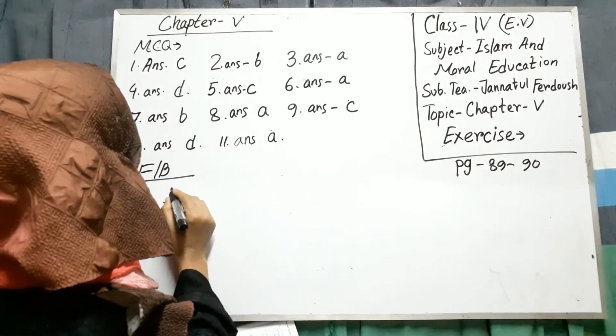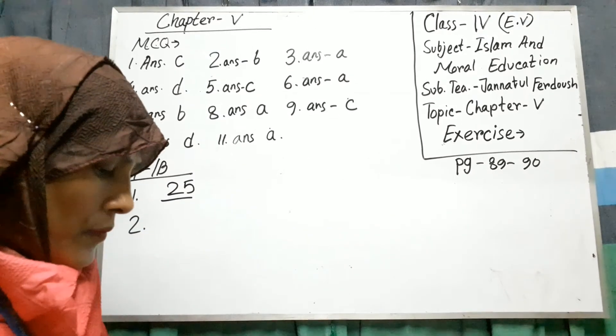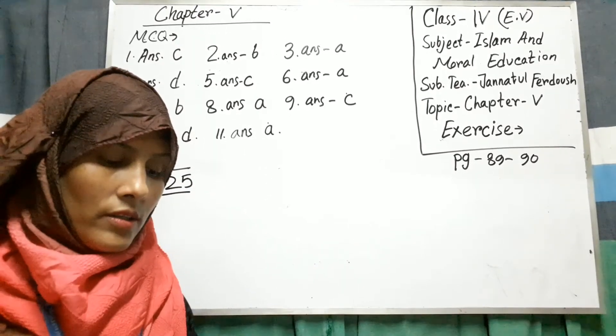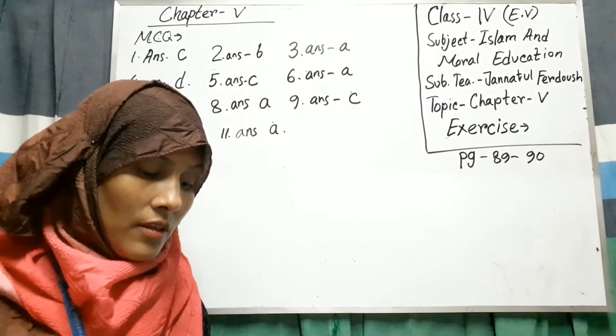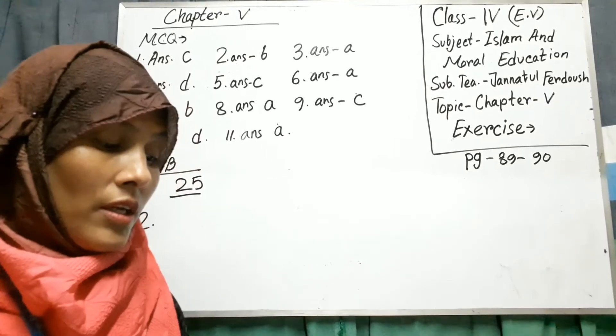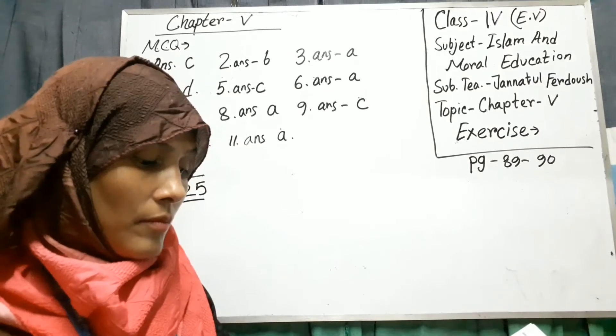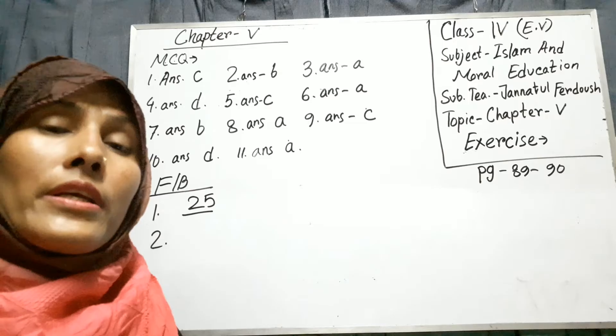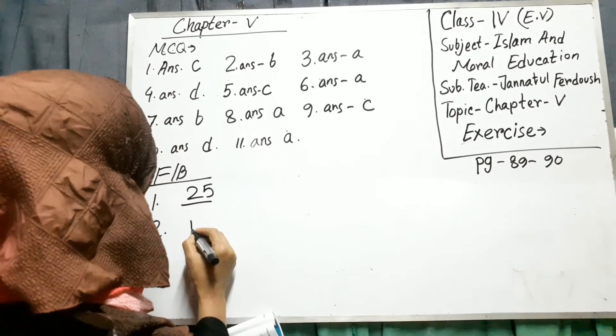Fill in the blanks. Follow your book. In the Quran Majid, the name of 25 person Nabi and Rasul are mentioned. I am writing only answer. Not question. 25. Fill in the blanks. 25. Number 2.